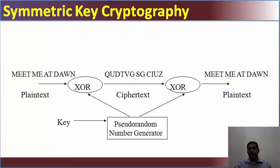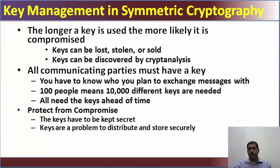'Meet me at dawn' is a plain text. It is passed through a pseudo-random number generator or an algorithm, and you get the resulting cipher text. With the same algorithm you decrypt the message and get 'meet me at dawn' as a plain text. Symmetric key uses a single key for both encryption and decryption, so both the sender and receiver must have the same key. However, there are key management issues in symmetric cryptography.